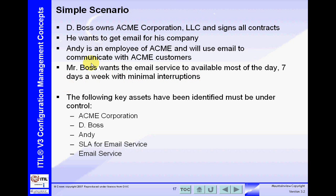In this simple scenario, we've identified five key assets that we want under control. Things that we want under control are called configuration items, and they belong in the configuration management database. Here we have the Acme Corporation, D-Boss, Andy, the SLA for the email service, and the email service itself.